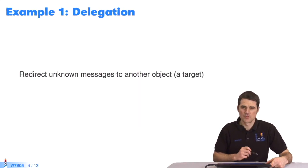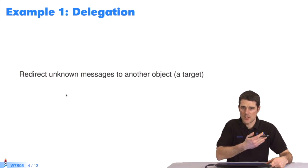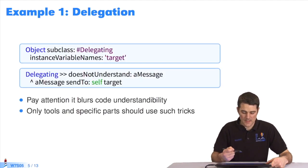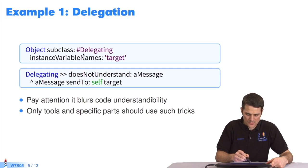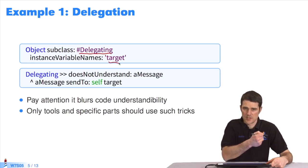Here, we'll look at some uses of doesNotUnderstand. Suppose we want to redirect all our messages to a different object. In a simple delegation, I create an object that stores the target, where messages will be sent.